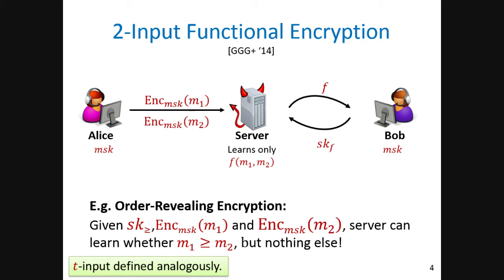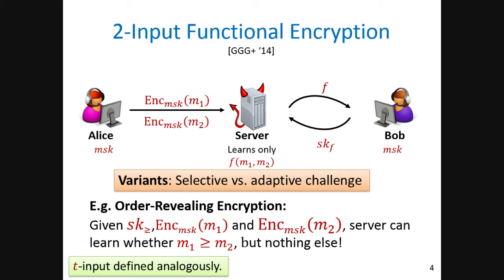The two-input functional encryption I'll talk about most of the time can be generalized to more inputs and has applications with more inputs, but I'll mostly focus on the two-input setting for simplicity. The formalization of security is very similar to the single-input one, and we have the same issue of selective versus adaptive security — who and when chooses the challenge, whether before or after interacting with the scheme.